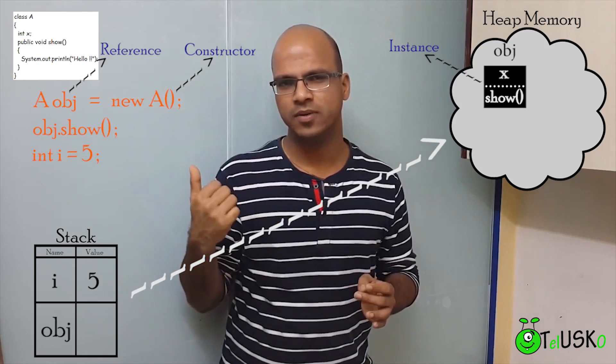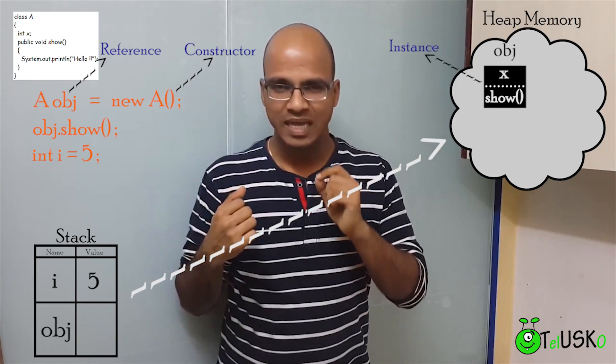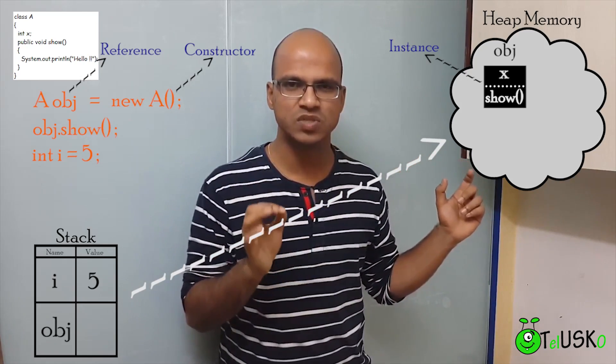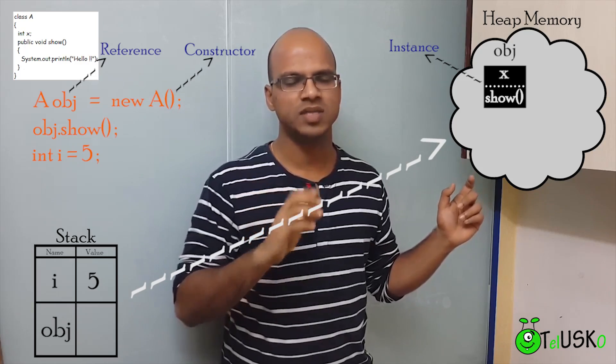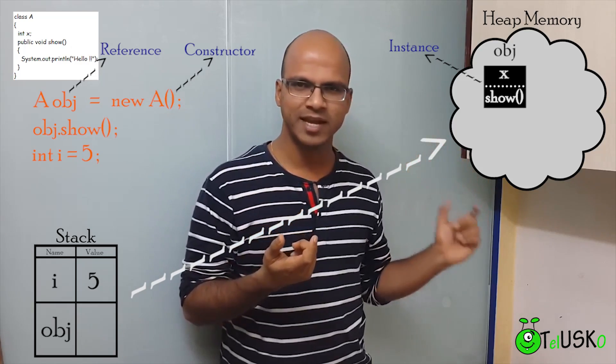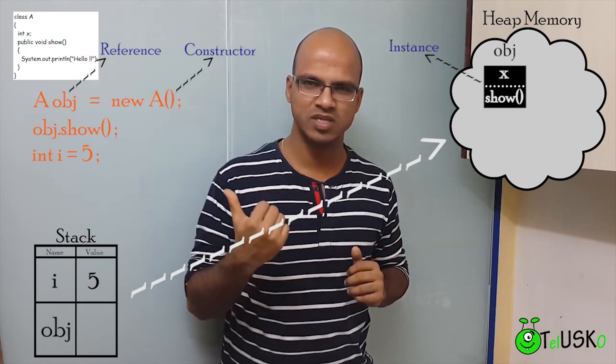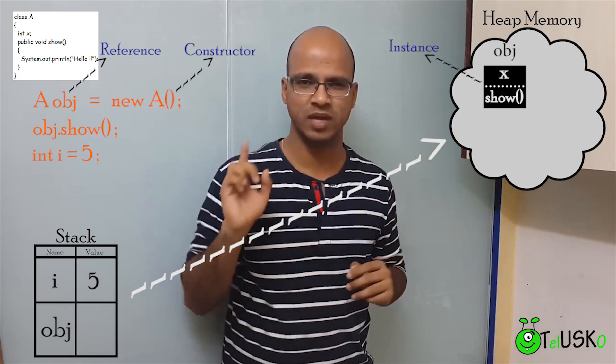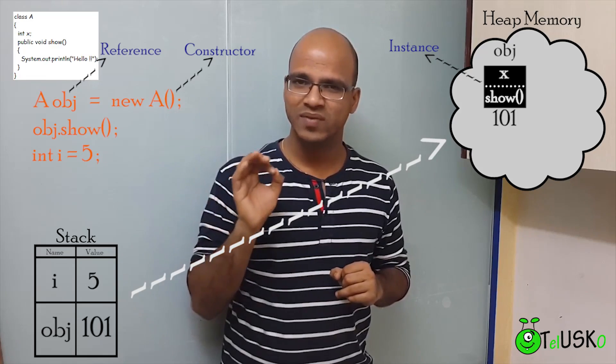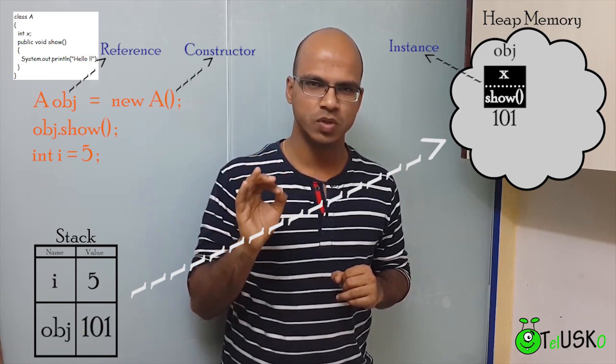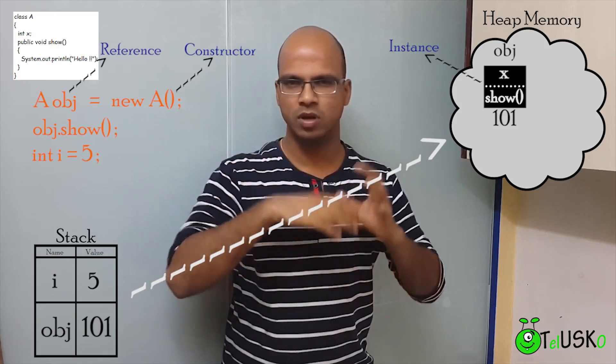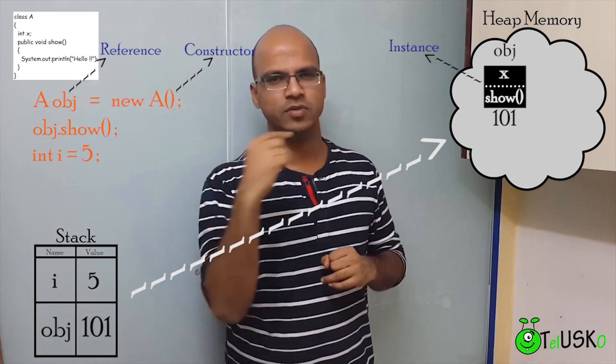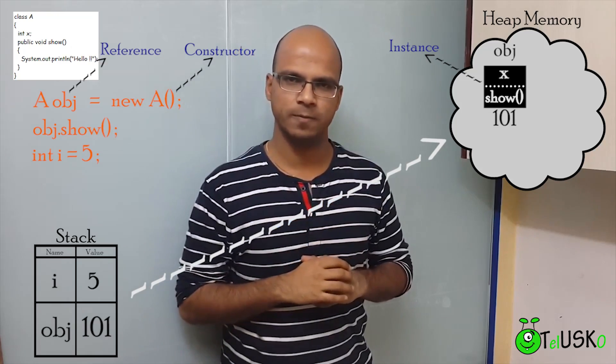So in that case, what is the second column for object? It is blank. We have to mention something there. That's why we have to mention, in this heap memory, every object or every instance will have a hash code or some type of code. We have to pick up that code and we have to assign that code here in the stack. So let's say that is 101. So that 101 is here. So whenever I say obj.show, your pointer or your reference will be fetching from the stack memory and it will go to the heap memory.